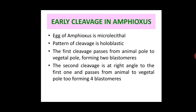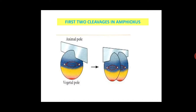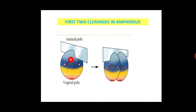The second cleavage is also meridional and at right angle to the first cleavage, resulting in 4 blastomeres. One thing to notice here is the spindle fiber and the metaphase plate — cleavage occurs at the metaphase plate, as seen in both diagrams.